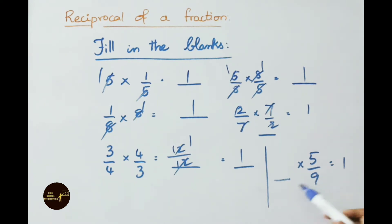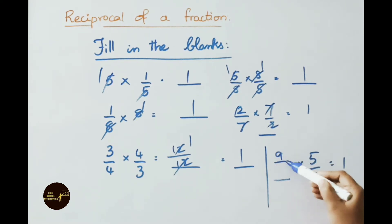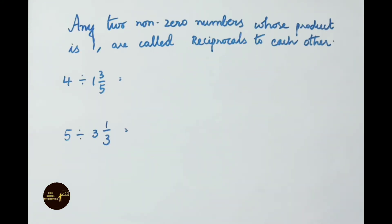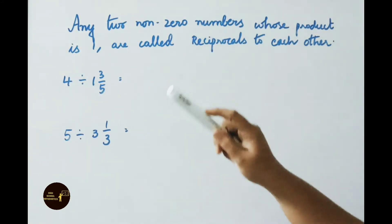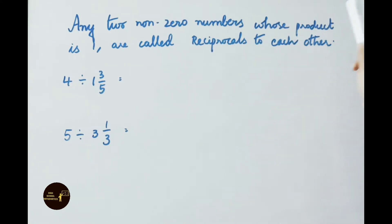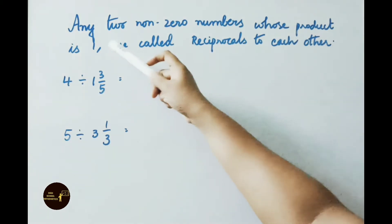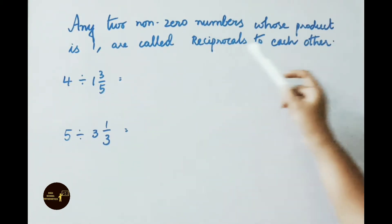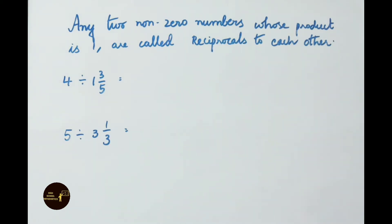See the next fraction: what number if you multiply 5/9, we get answer 1? 5/9 reciprocally is 9/5. If we multiply with that, we get answer 1. From the previous sums, we observed that 2 non-zero numbers after multiplication give us 1. So those are called reciprocals to each other. Definition: any 2 non-zero numbers whose product is 1 are called reciprocals to each other.